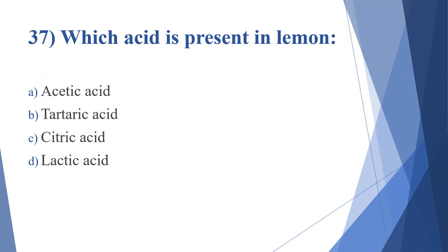Thirty-seventh question: which acid is present in lemon? Option A: acetic acid. Option B: tartaric acid. Option C: citric acid. Option D: lactic acid. Answer is option C, citric acid.